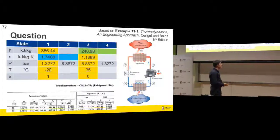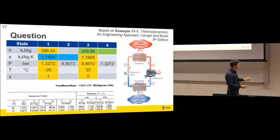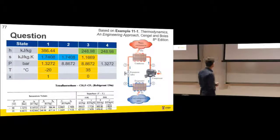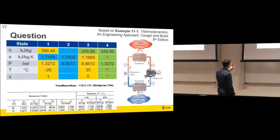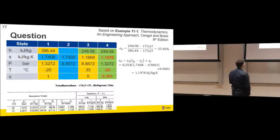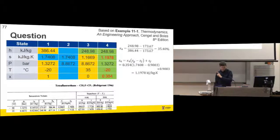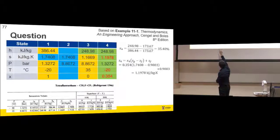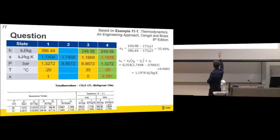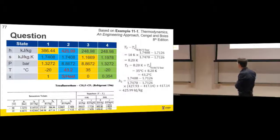We've got isentropic compression from state point one to state point two through the compressor, and h3 equals h4 through the expansion valve slash throttle. Now we've got two independent intrinsic values for state points two and four. State point four has a quality - interestingly about 35%, similar to the previous example. That's just interpolating that enthalpy on the minus 20 degree line - putting 248 between 173 and 386. We do the same thing for state point two using the Rogers and Mayhew tables, which I'll cover tomorrow. That completes our table.